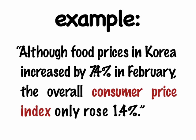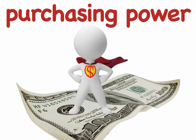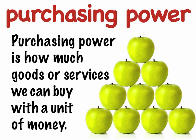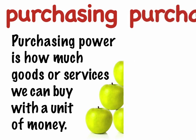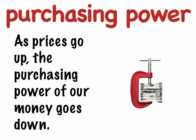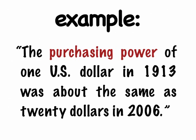Purchasing power is how much goods or services we can buy with a unit of money. As prices go up, the purchasing power of our money goes down. The purchasing power of one US dollar in 1913 was about the same as $20 in 2006.